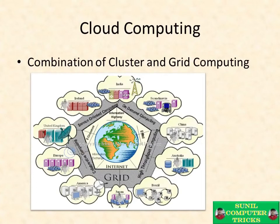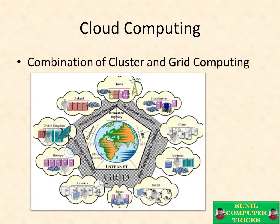Cloud computing is a combination of grid and cluster computing. A multinational company with branches all over the world has servers located across the globe as computing resources and infrastructure. All these servers are connected as a grid. And within each location — represented as bubbles — there are more servers forming a cluster. So cloud computing is a grid of clusters.